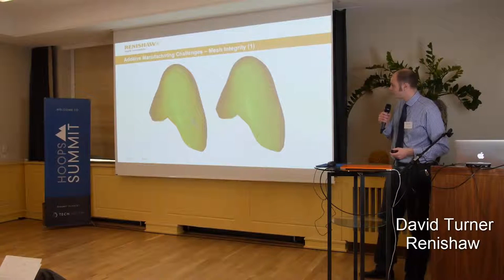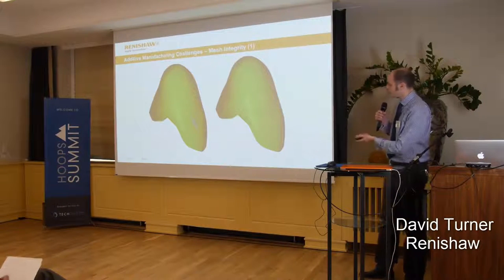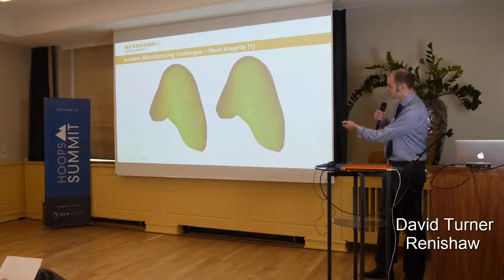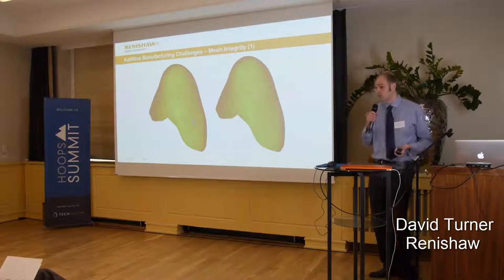Jonathan talked about mesh integrity, and this is absolutely key to us. As you can see, the part on the left has a big hole in it. That will actually go through the printer and it will print. It will come out the other side and it will look like a complete part.